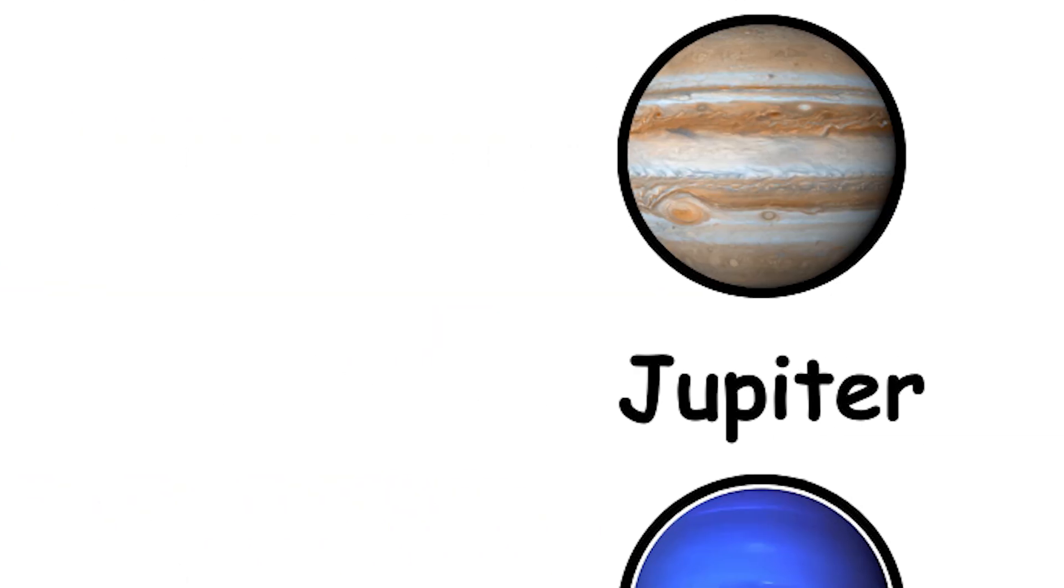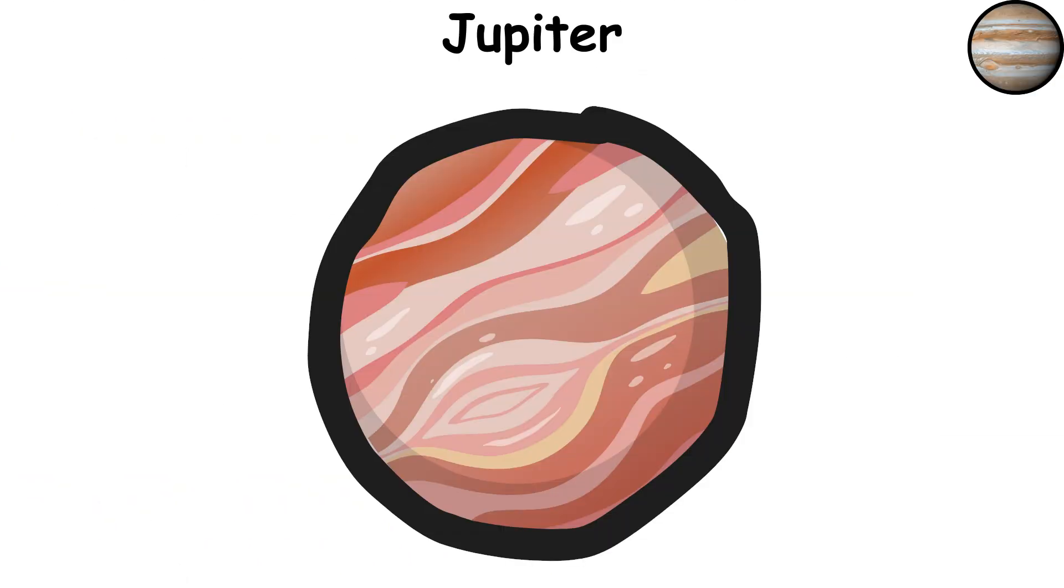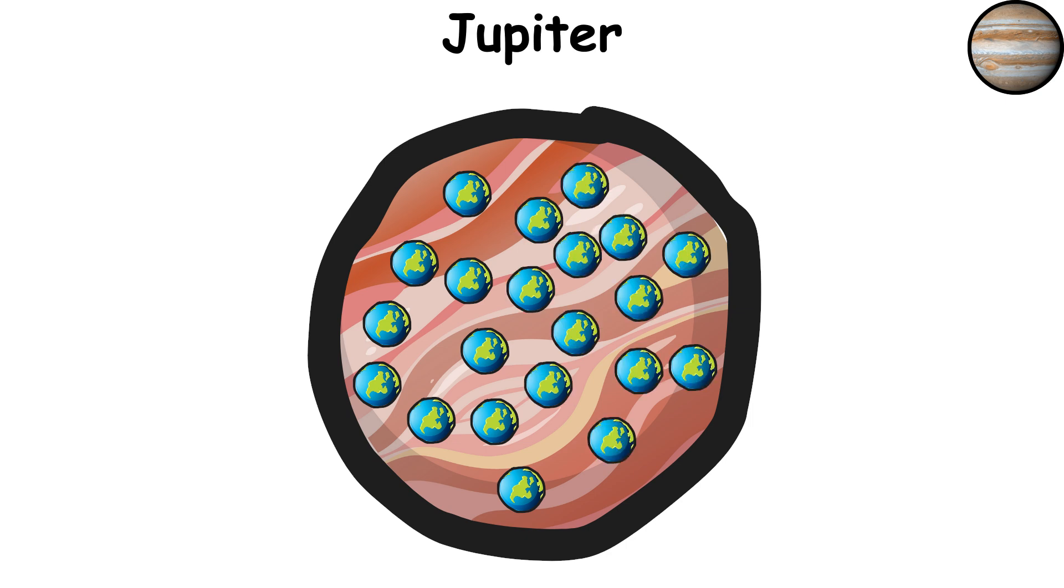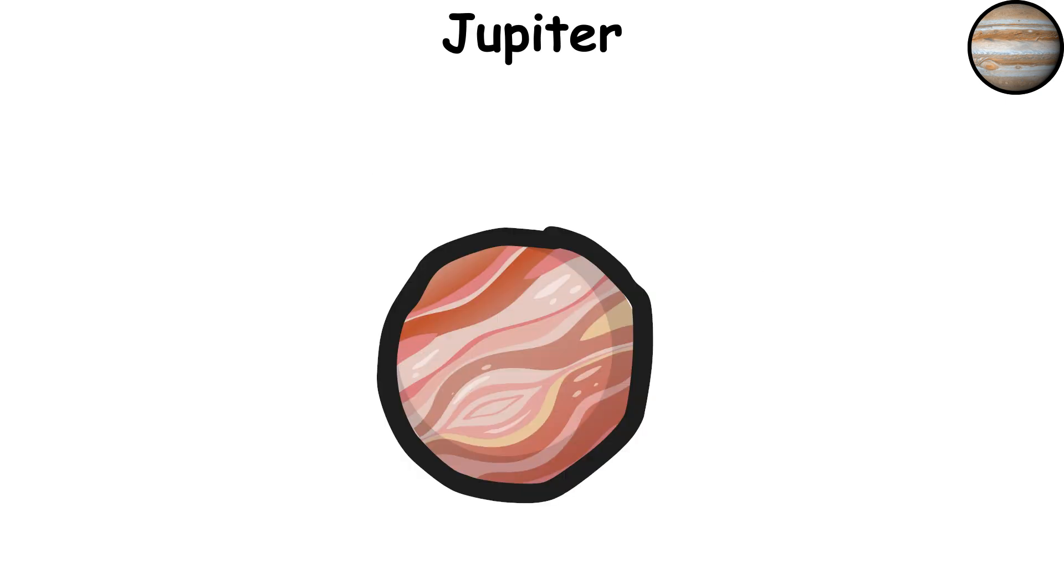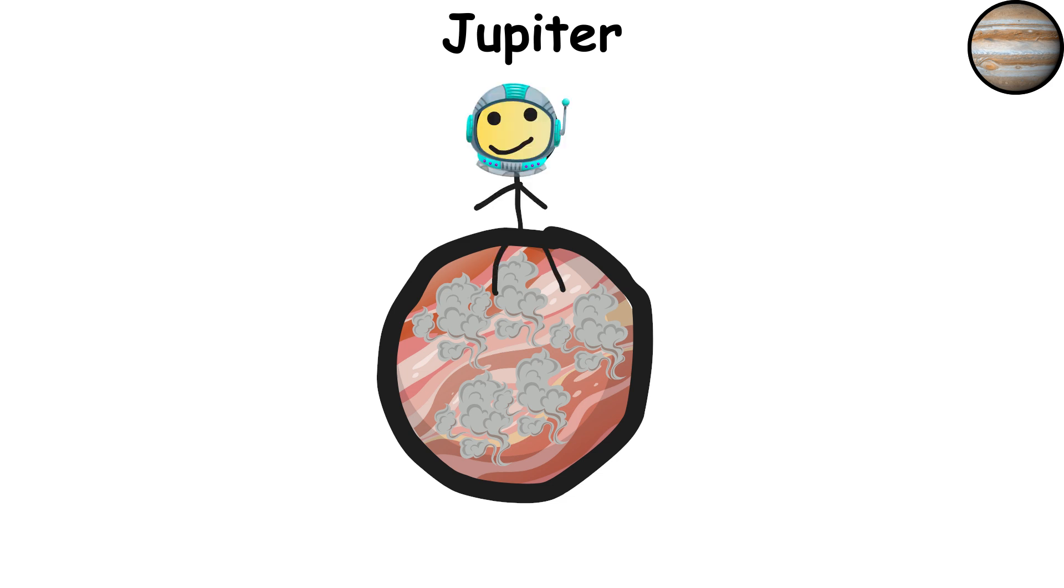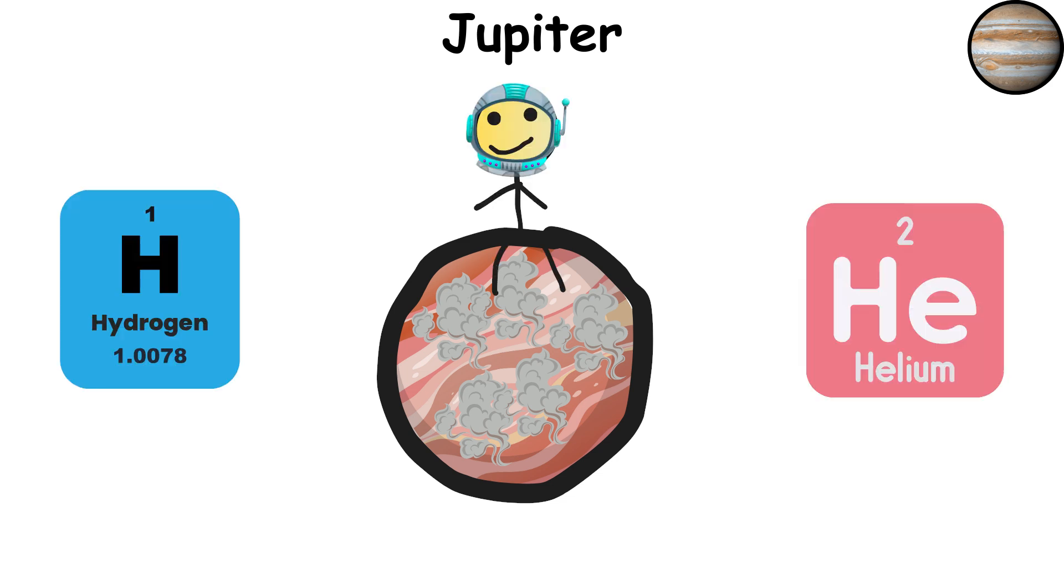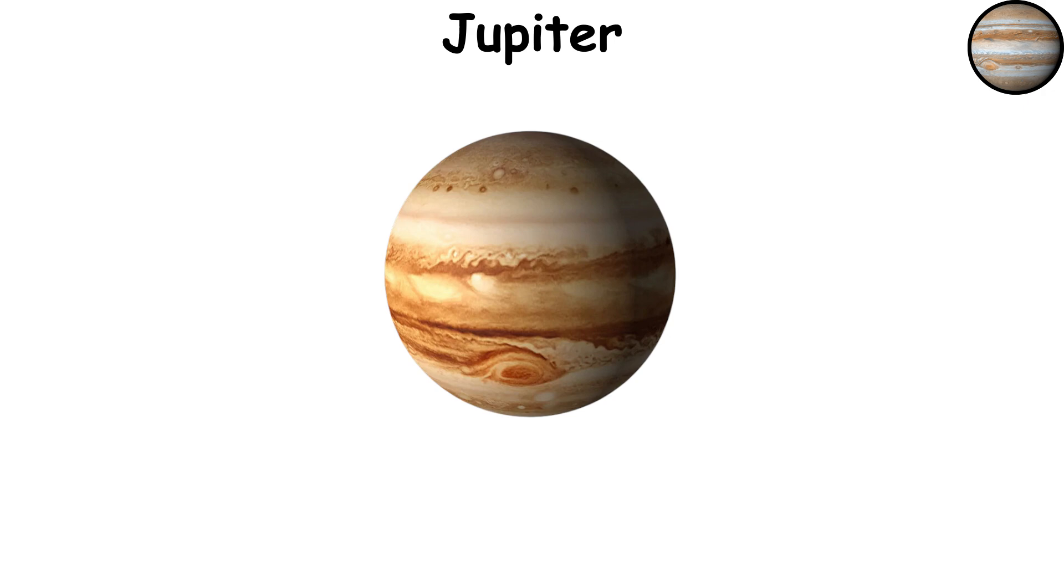Jupiter, the big boss of the solar system. It's so massive that over 1,300 Earths could fit inside it. Jupiter is essentially a swirling ball of gas with clouds made mostly of hydrogen and helium. And that great red spot? It's a storm that's been raging for over 300 years. That's longer than any storm on Earth by a long shot.